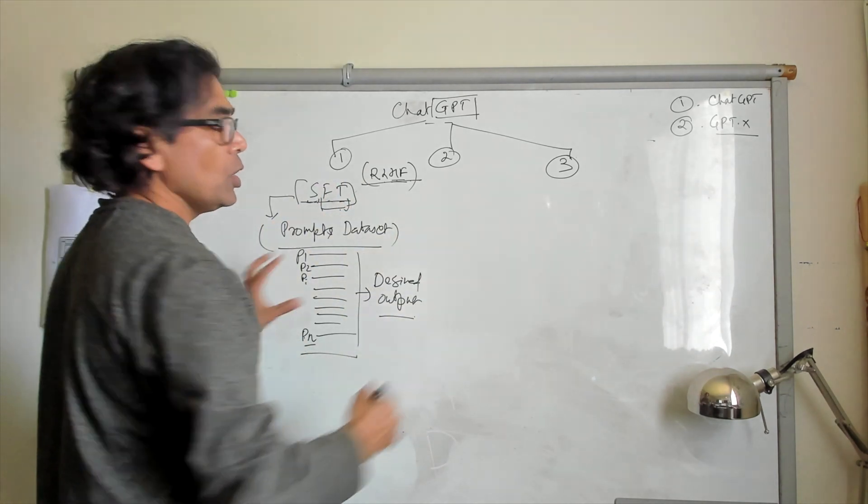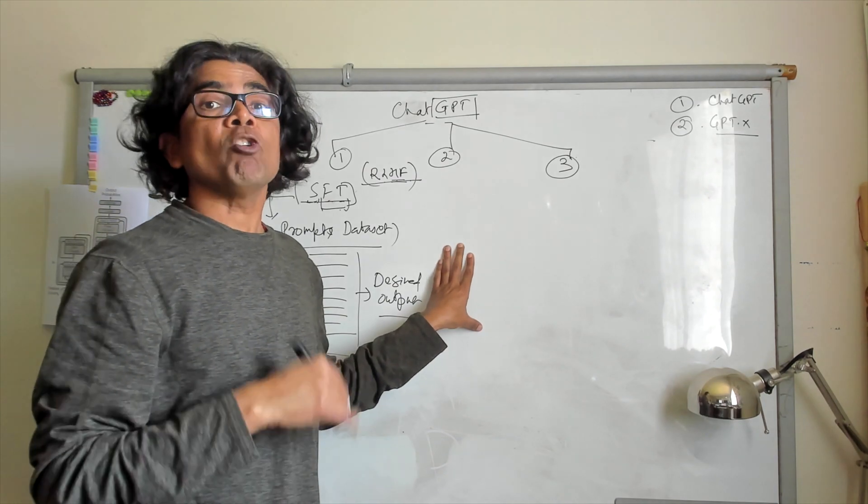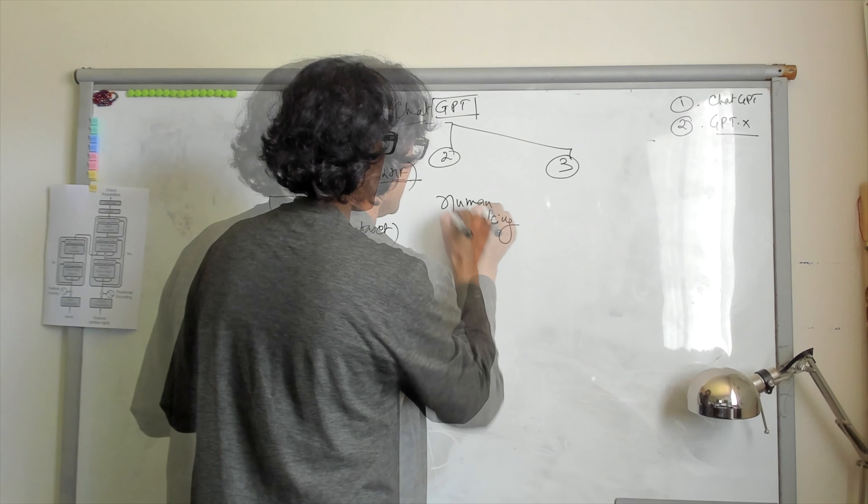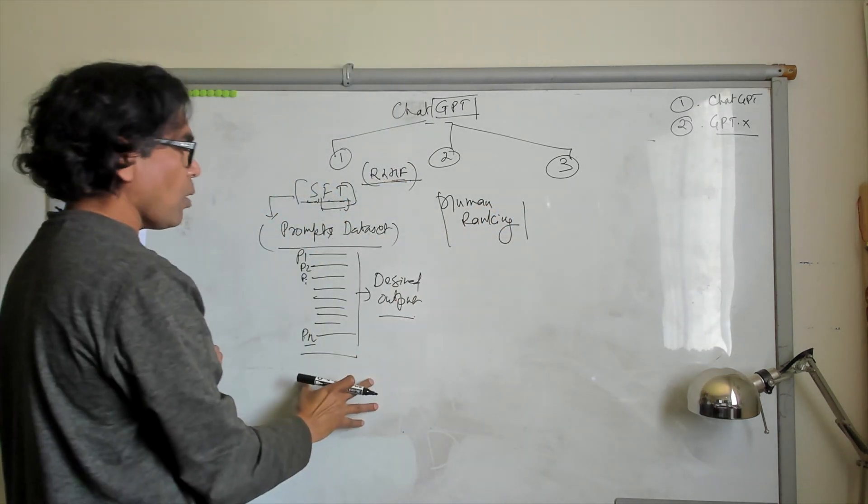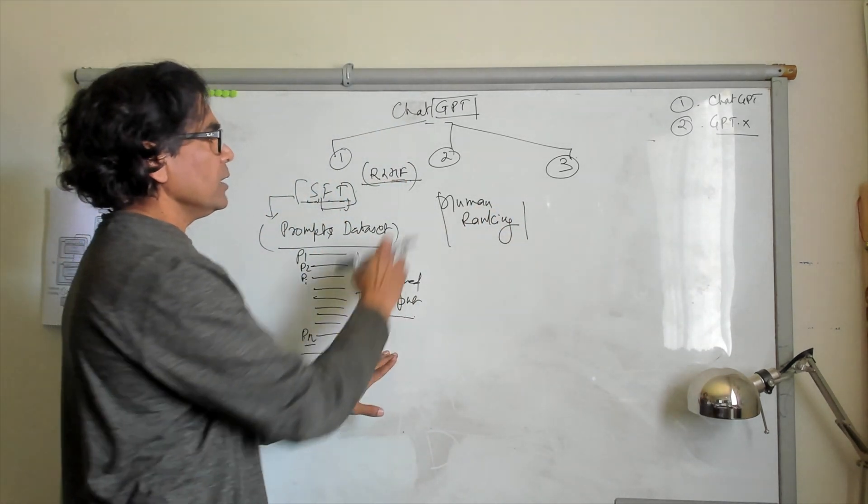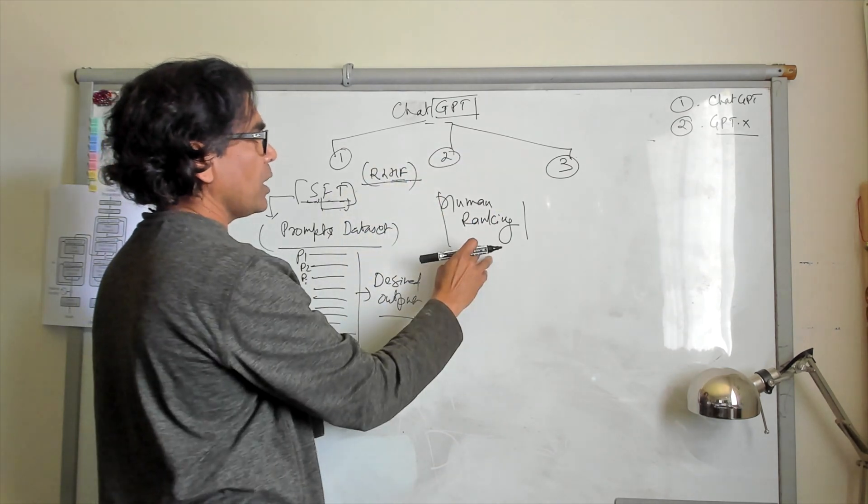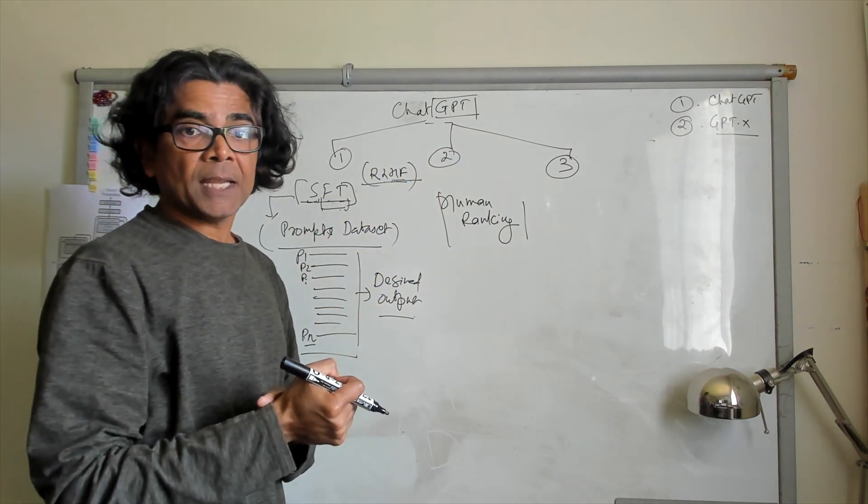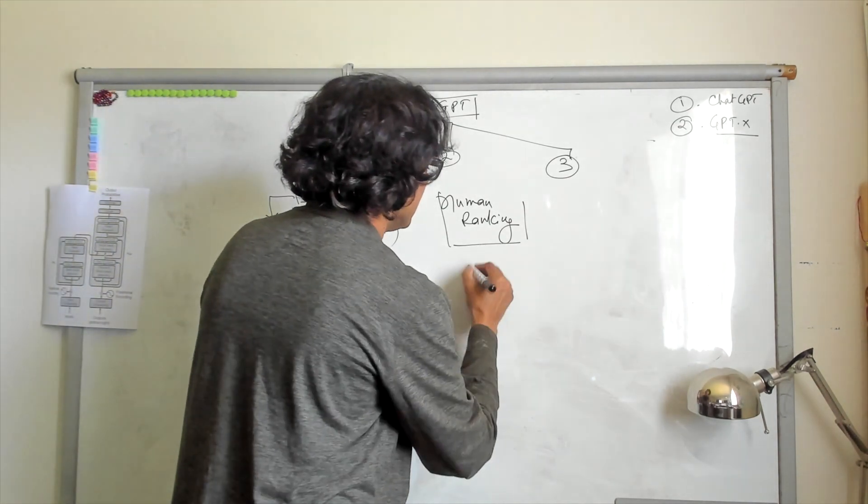In step two, we are actually using the human ranking of the results. We could say human ranking means whatever model is generating the results. The second step, we are generating the human ranking, and by combining the human ranking, a reward model is created.